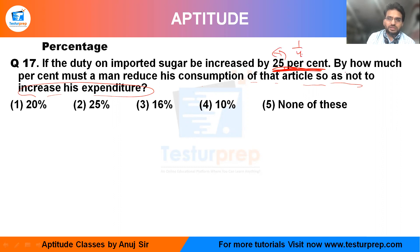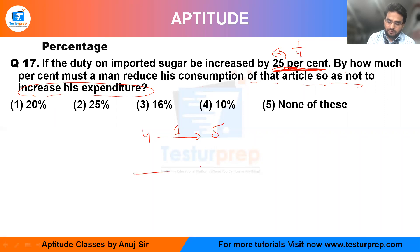Since 25% = 1/4, the fraction form means 1 is the increase on 4, and the final value becomes 5. After that, we have to find the decrement — that means both the initial and final expenditure values should be the same.